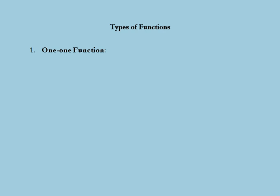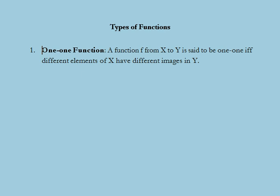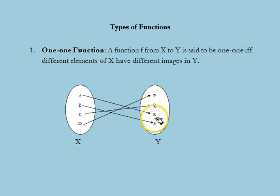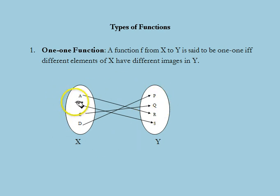The first type of function we are going to discuss is the one-to-one function. A function f from x to y is called one-to-one if and only if different elements of x have different images in y. In this example, x contains elements a, b, c, and d, and y contains elements p, q, r, s. We note that different elements of x have different images in y, therefore this function is a one-to-one function.